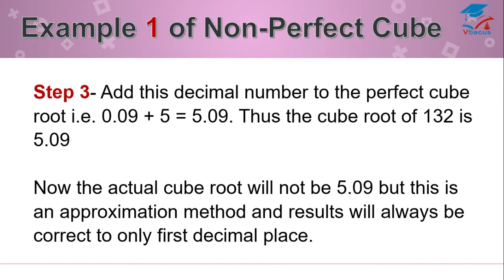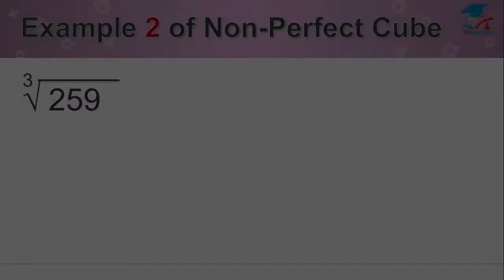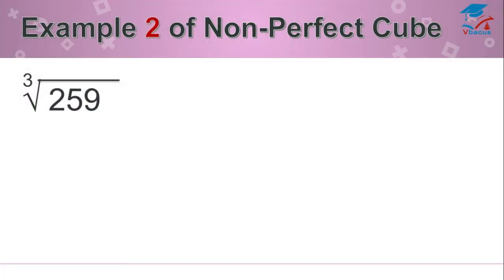Now the actual cube root will not be 5.09, but this is an approximation method and the results will always be correct to only first decimal place.